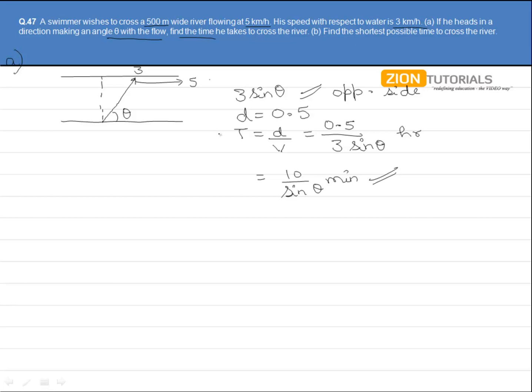Now, this is the time it will be taking when it is heading at an angle of theta. But in the second part, they are asking us what is the shortest possible time?